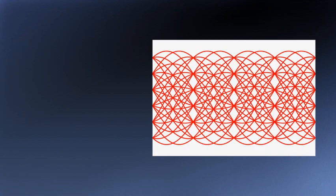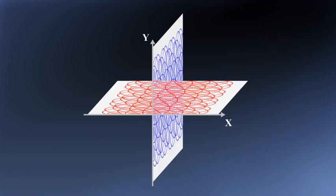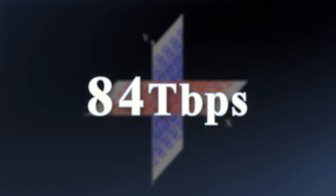This circuit applies X-polarization and Y-polarization to the 32QAM signal. In this way, we have achieved the transmission speed of 84 terabits per second per core.